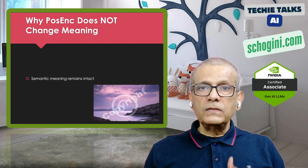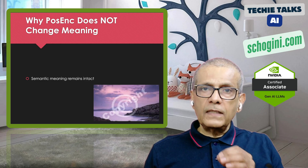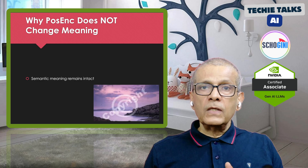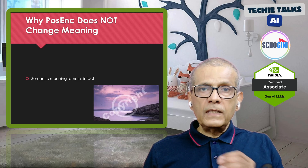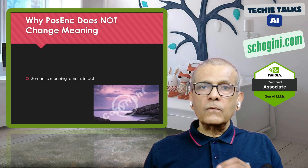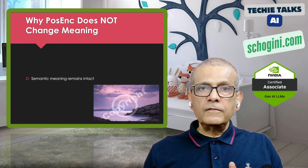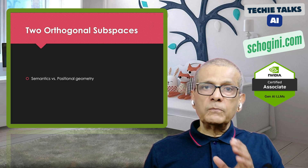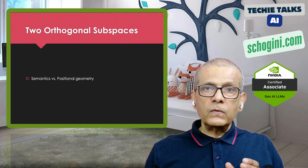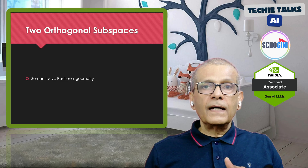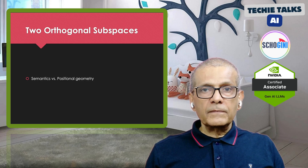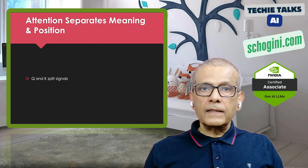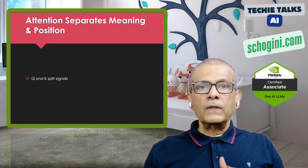Why does positional encoding not change meaning? Meaning lives in a huge space; positional encoding is a tiny structured ripple. Semantic vector magnitudes are large; positional waves are smooth and tiny — they don't disrupt semantic similarity. Like adding a faint watermark on a big image. Semantics and position live in two orthogonal subspaces — the model can easily separate the two because they look nothing alike, like handwriting versus a printed barcode. Attention naturally splits meaning and position, so nothing gets overridden.